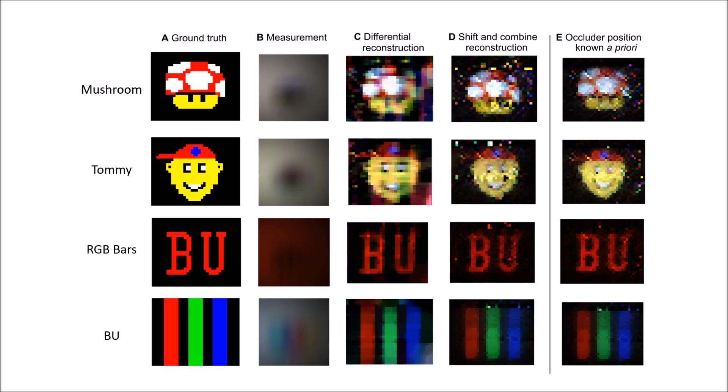Presented here are a number of reconstructions achieved in the scene described. Column A shows the ground truth image displayed on the monitor, and column B shows the camera measurement that was acquired. Column C shows the result of the reconstruction algorithm following the occluder position estimation.